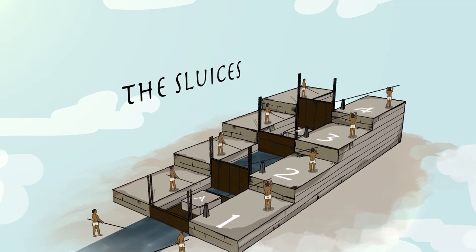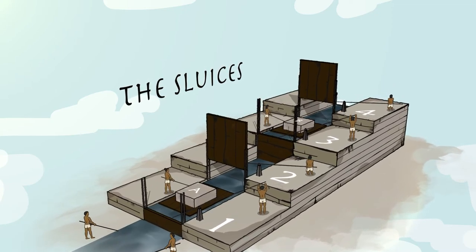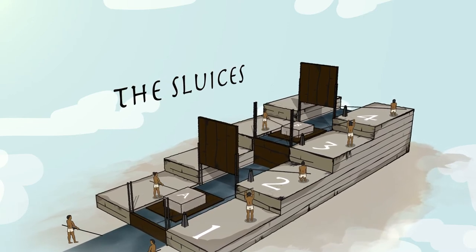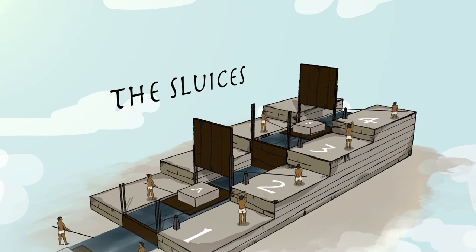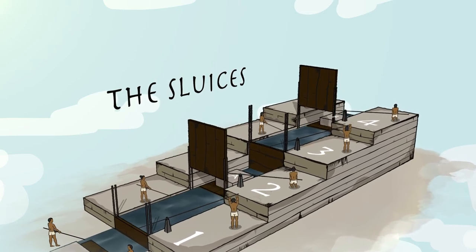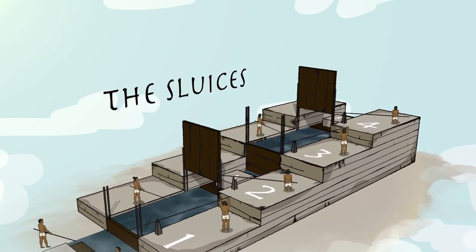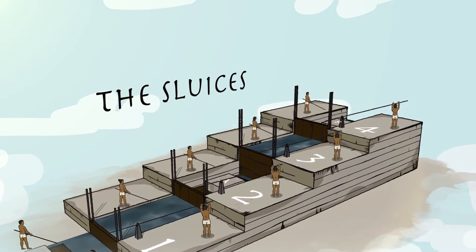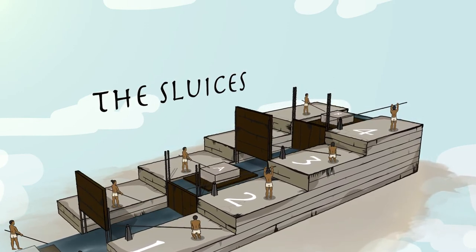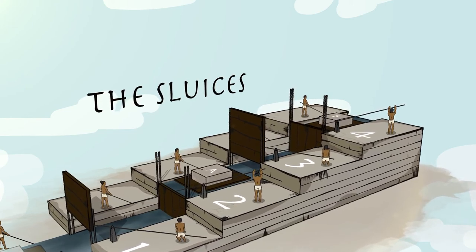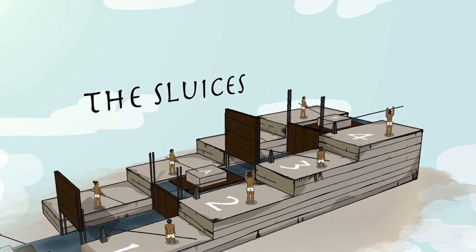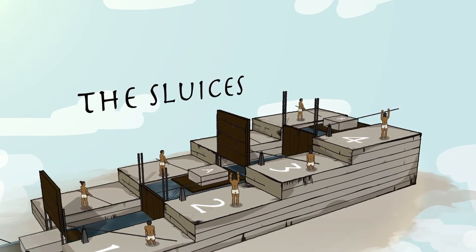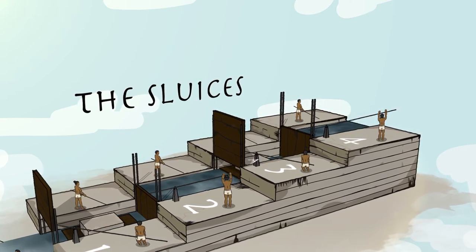The gates for sluice 2 and 4 would raise or open. Water from sluice 2 would drain to sluice 1 and simultaneously water from sluice 4 would drain into sluice 3. Stone A would lift into sluice 2 and Stone B would lift into sluice 4. The gates for sluice 2 and 4 would then lower or close and the gates for sluice 1 and 3 would raise or open. Water from sluice 1 would drain into the canal and the water from sluice 3 would drain to sluice 2, raising Stone A.